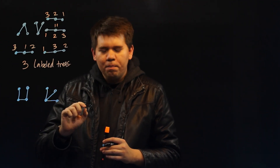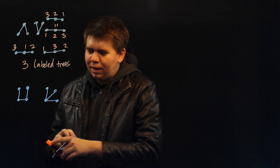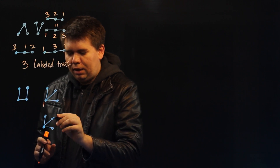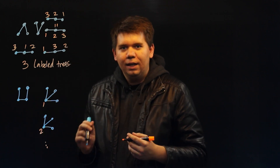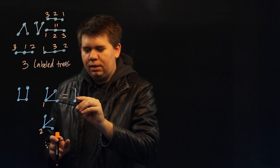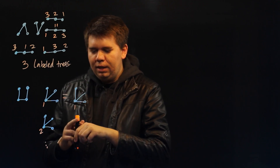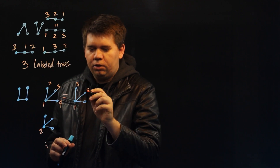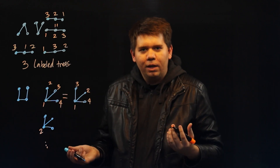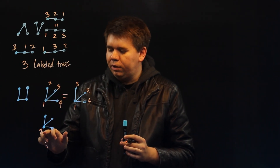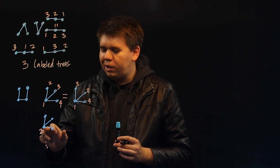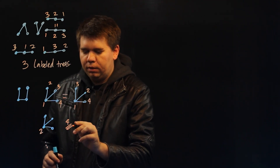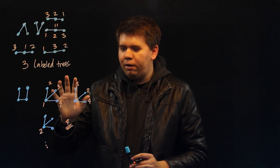We can begin to count how many ways we can label each form. For the star tree, what's decisive is what label goes on the center vertex of degree 3. Labeling it 1 gives something fundamentally different than labeling it 2, 3, or 4. But once the center is labeled, the leaves can be arranged in any order and still record the same information. So there are a total of 4 ways to label the star form.